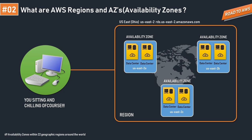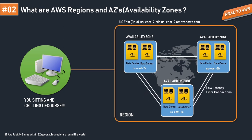Even though availability zones are isolated from each other, to achieve data replication they are connected with low-latency fiber connections so that data can be replicated across availability zones. This is one of the beautiful features of AWS: if one availability zone fails, you have the others from which you can still access your resources.